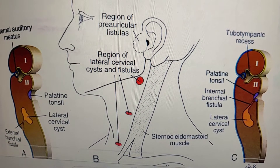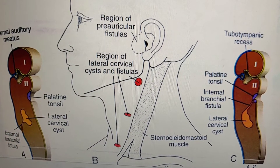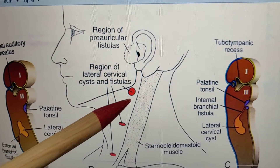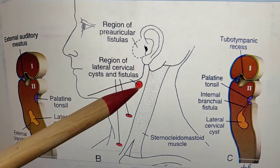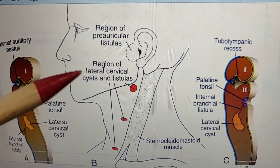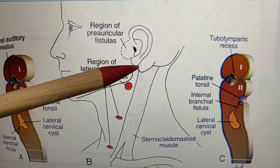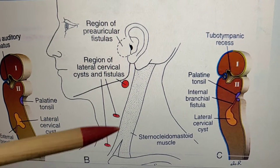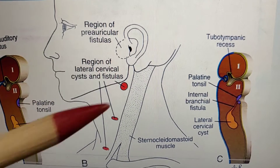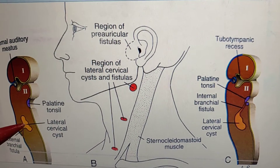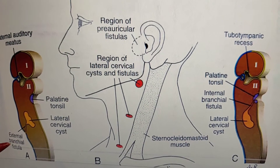In this diagram, the sternocleidomastoid muscle is shown with three red dots representing the positions of the branchial cyst. This cyst results from persistence of the lateral cervical sinus. The most common site is the upper position, close to the angle of the mandible at the anterior border of the sternocleidomastoid muscle, though it may also be in the middle or lower positions. If the sinus communicates to the outside, it forms an external branchial fistula.